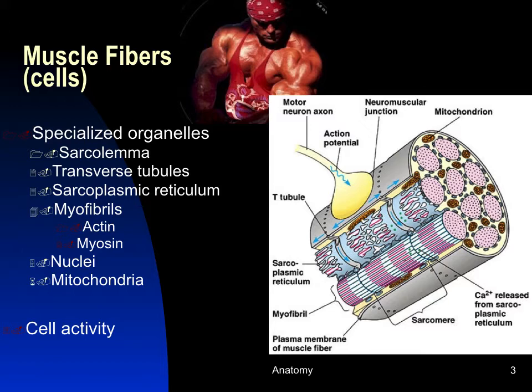Skeletal muscle cells all have a specialized region where they contact a neuron — the neuromuscular junction, or motor end plate. The sarcolemma also has specialized pits called transverse or t-tubules that go deep into the muscle cell. These t-tubules are always associated with a specialized endoplasmic reticulum called the sarcoplasmic reticulum, which is modified to store calcium.